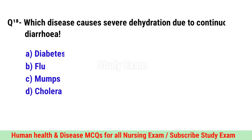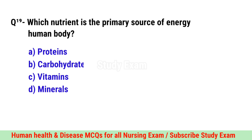Question No. 18. Which disease causes severe dehydration due to continuous diarrhea? Correct option is D. Cholera.